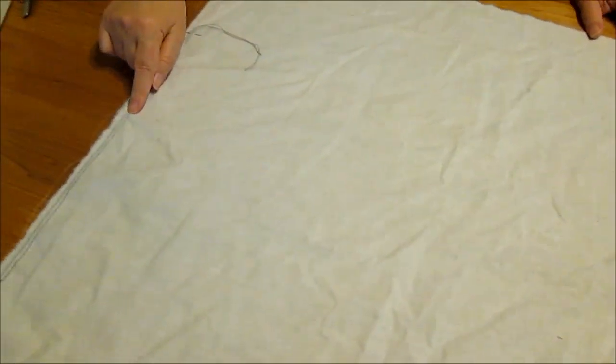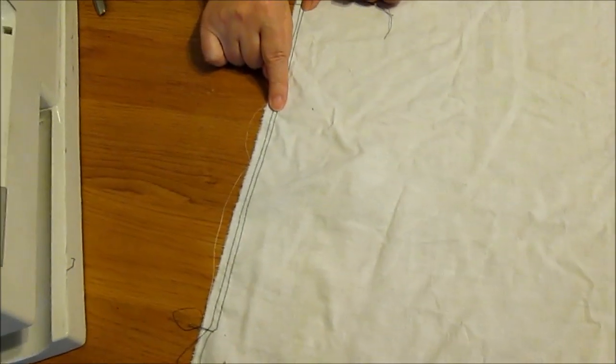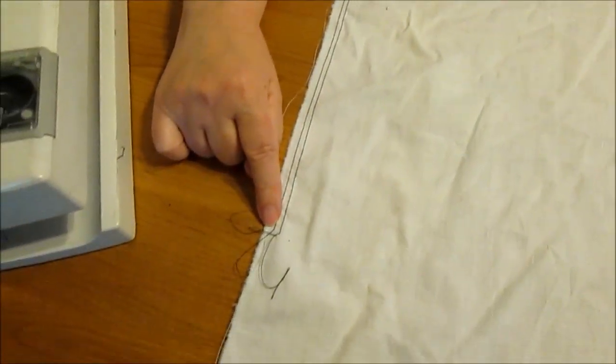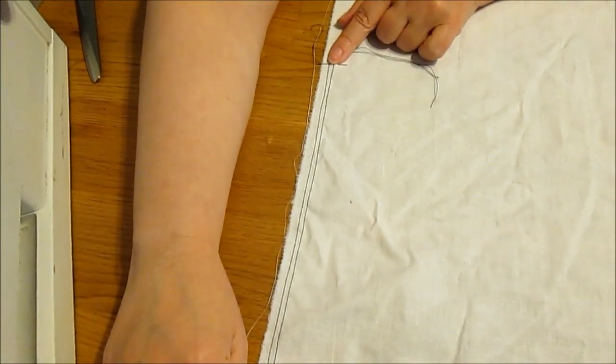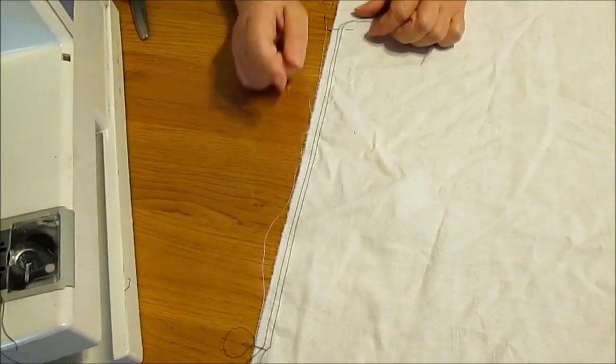On the other side of the sleeve, the side that's going to attach to the shirt itself, I've put in about 12 inches of stitching. Once again this is in black for demonstration purposes. We're going to use this to gather up the top of the sleeve.